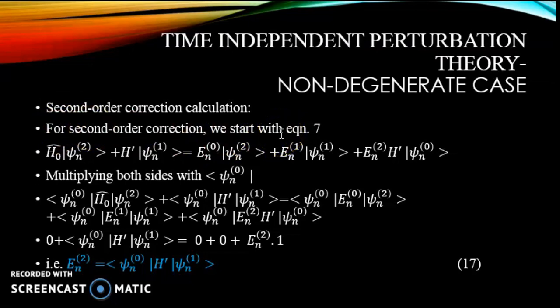we start with equation 7 and we have this equation which is equation 7 in the previous slides. Multiplying both sides with ψ_n^(0), we have this expression where every term of this equation 7 has been multiplied with ψ_n^(0). As this is 0, we get 0 here plus we get the second term as it is and on the right hand side we have first term 0, we are left with only the third term.